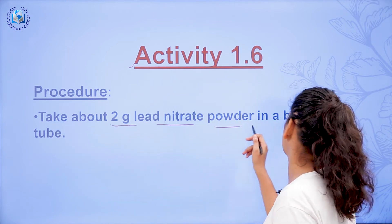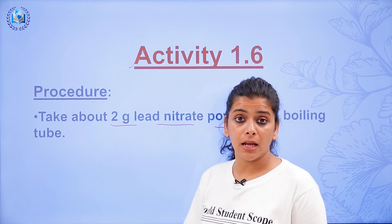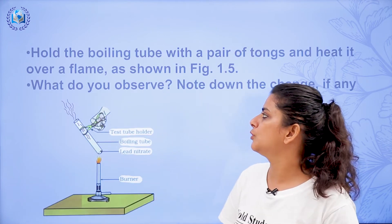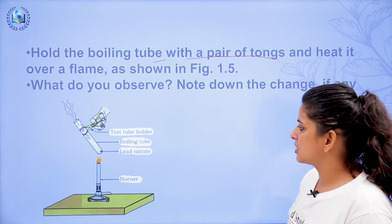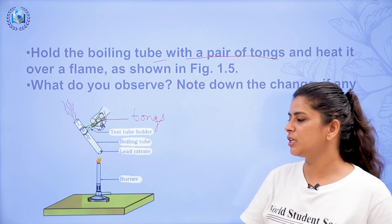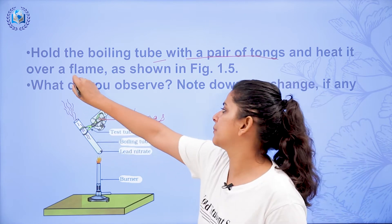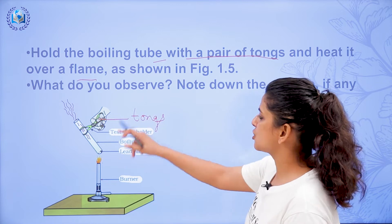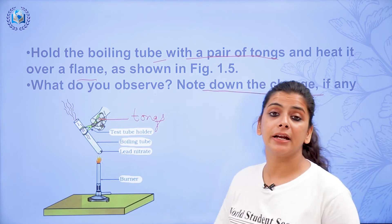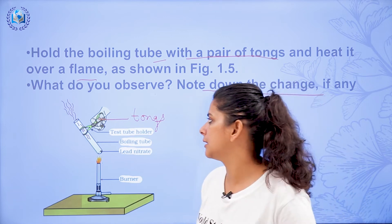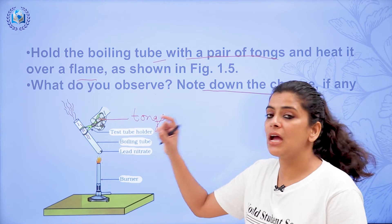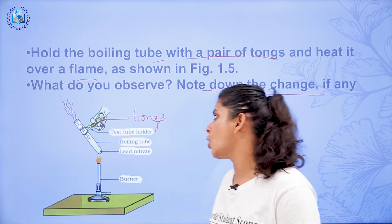Take 2 grams of lead nitrate in a boiling tube. Hold the boiling tube with a pair of tongs and heat it over a flame on a burner. You can see in the figure — these are the pair of tongs which this person is holding. Now heat the lead nitrate and observe what changes take place. Earlier we did this with ferrous sulfate and observed a change in color from green to brown. Now we have taken lead nitrate and heated it, and they are asking us to observe what changes take place.